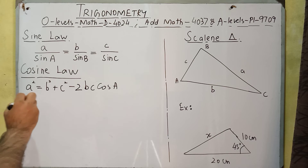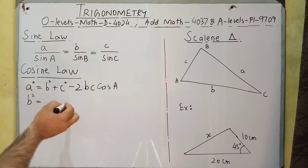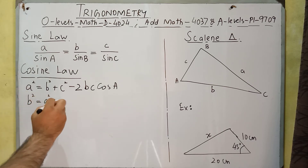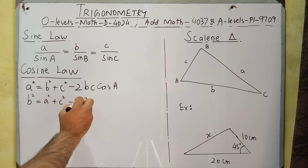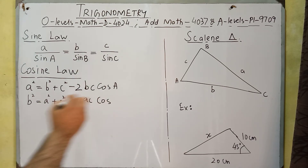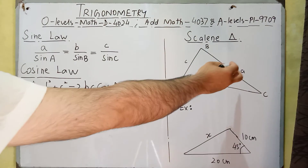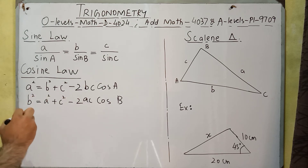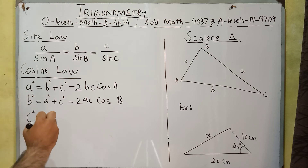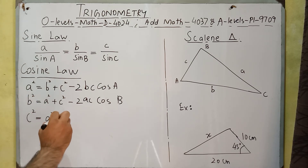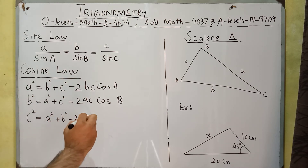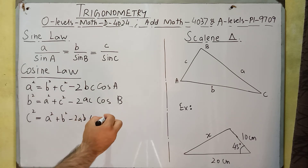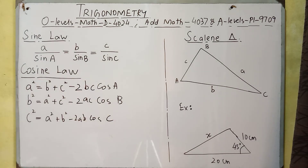We can also start from side b: b² equals a² plus c² minus 2ac times cos of the angle between a and c, which is angle B. Similarly, starting from c: c² equals a² plus b² minus 2ab times cos of the angle between a and b, which is angle C. This is the cosine law.